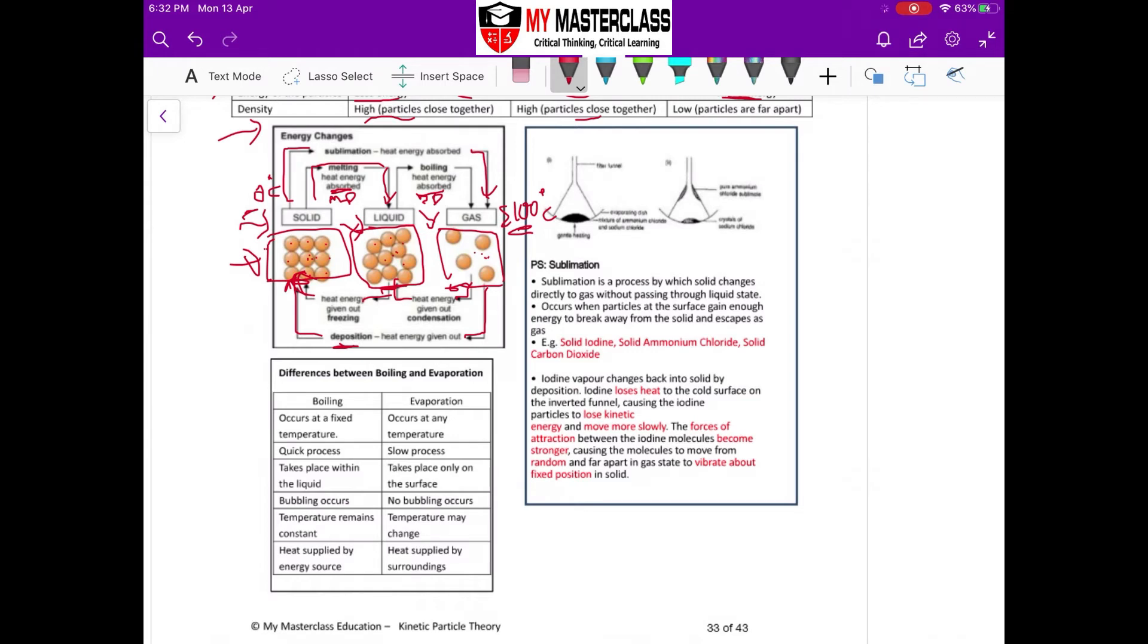This part is also quite important: we need to know the differences between boiling and evaporation. Boiling, especially for pure substances, occurs at fixed temperature. Evaporation occurs at any temperature - outside room temperature, 25 degrees, 35 degrees, any temperature, effectively evaporation can occur. Boiling is very quick and there's an external heat source. Evaporation is usually much slower and then this heat is from surrounding.